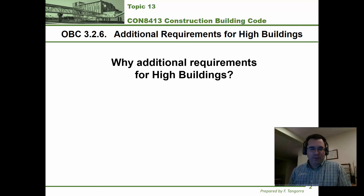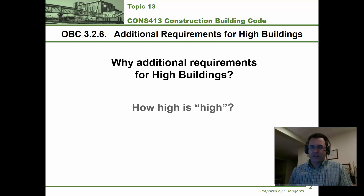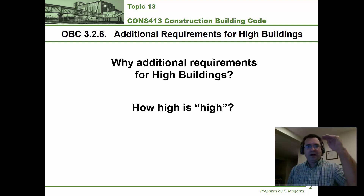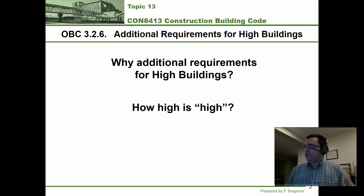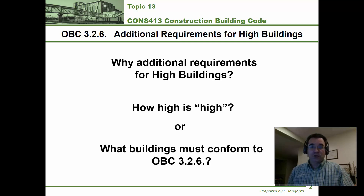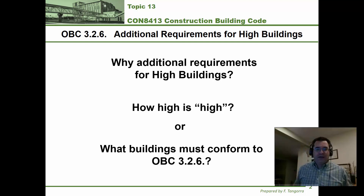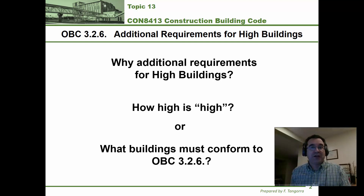For today's topic we're going to look at whether or not there are additional requirements for so-called high buildings. But even more importantly, we're going to look at — according to Part 3 of the building code — how high is high? And specifically, how do we determine whether or not a building falls under the requirements of subsection 3.2.6 of the Ontario Building Code, based on its vertical distance.